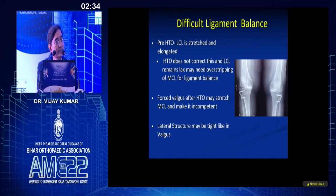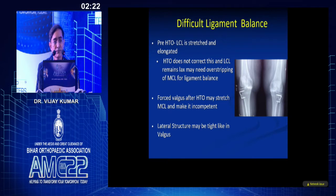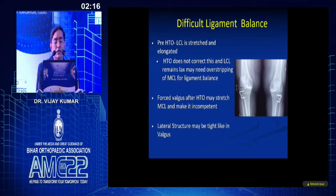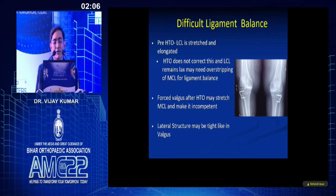Ligament balance is difficult because pre-HTO the LCL is elongated and nothing has been done for that. For balancing, you might have to release more of the MCL in patients who have recurrent varus after HTO. Sometimes, if there is forced valgus after HTO, this may overstress the MCL and make it incompetent, essentially giving you a valgus knee — so you have to treat it like a valgus knee.